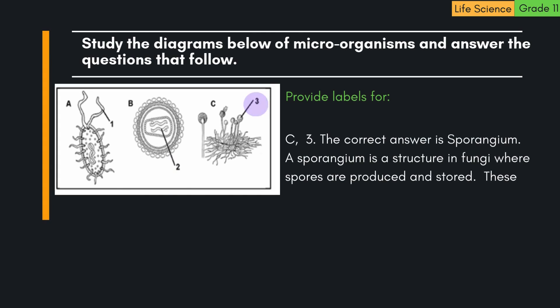C3. The correct answer is sporangium. A sporangium is a structure in fungi where spores are produced and stored. These spores are later released for reproduction and dispersal.